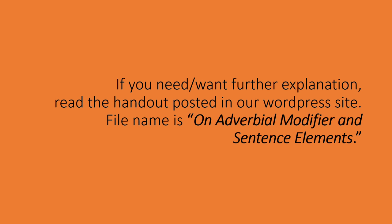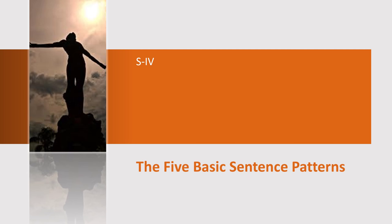I hope that's clear. If you want further explanation, you may read the handout posted on our WordPress site — just download the Word file on adverbial modifiers and sentence elements. Knowing all these elements, we can now play around with all these sentence parts, phrases, and clauses to form different sentence varieties. A requirement is that you know the five basic sentence patterns: S-I-V, S-L-V-S-C, S-T-V-D-O, S-T-V-I-O-D-O, and S-T-V-D-O-O-C.